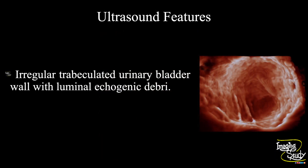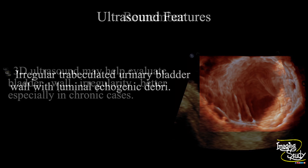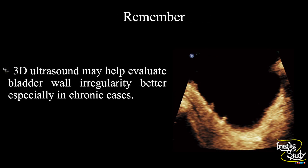In summary, an irregular trabeculated urinary bladder wall is seen with luminal echogenic debris, indicating a case of cystitis, more precisely chronic cystitis. The take-home message is that 3D ultrasound may help evaluate bladder wall irregularity better than B-mode ultrasound, especially in chronic cases.